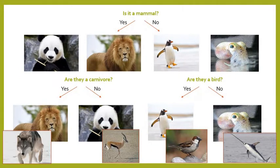Hopefully you got the following answers. The wolf ends up with the lion — they're both carnivores. The gazelle ends up with the panda — they are both herbivores. And the sparrow ends up with the penguin. This is quite a simple classification system, and scientists will tend to need a much more complicated one simply because there are so many animals and plants that need to be sorted.